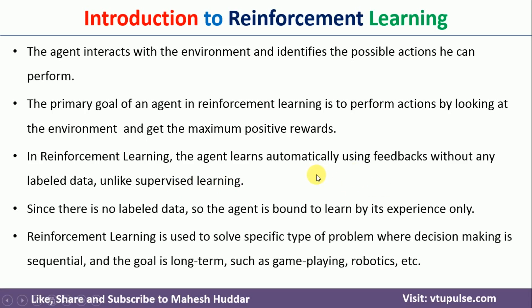Reinforcement learning can be used to solve problems where decision making is sequential, that is step by step. As in the previous example, the agent reaches the goal step by step — he cannot go directly to the goal. So if the decision making is sequential and it is a long-term goal, you can use reinforcement learning. Some examples where we can use reinforcement learning are game playing and robotics.